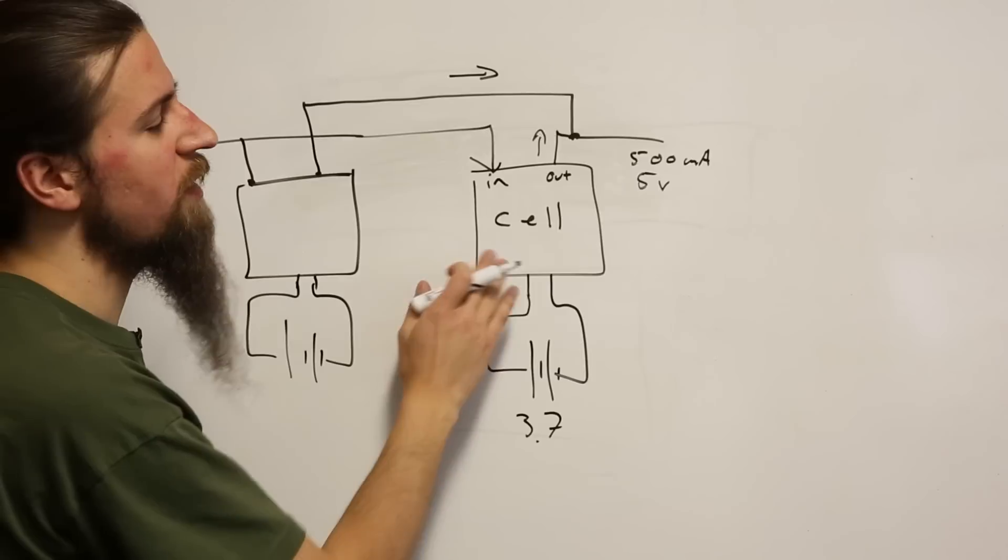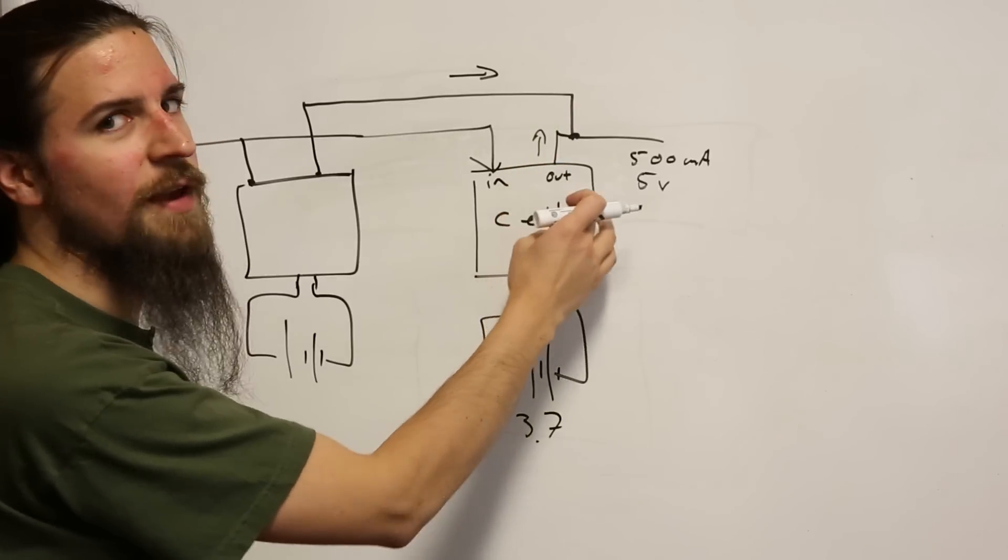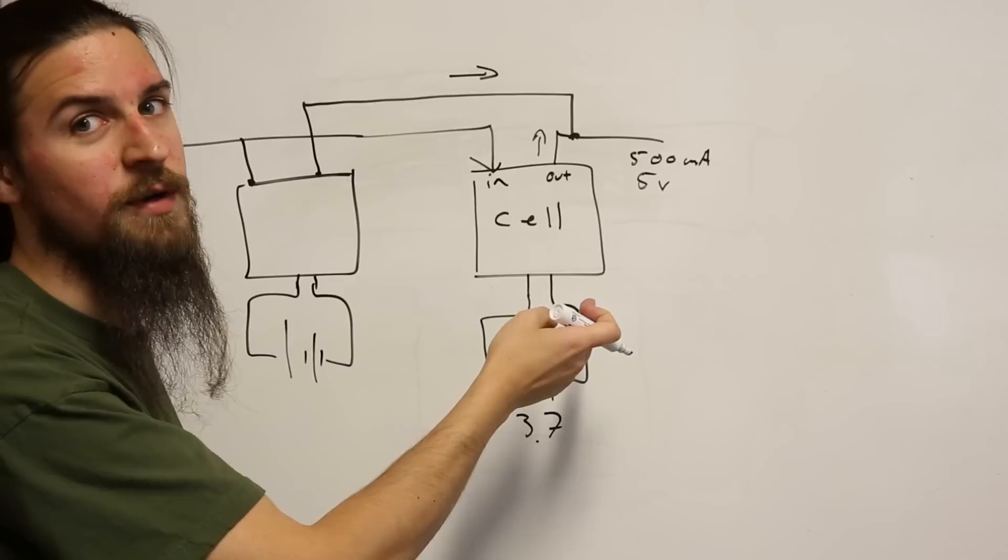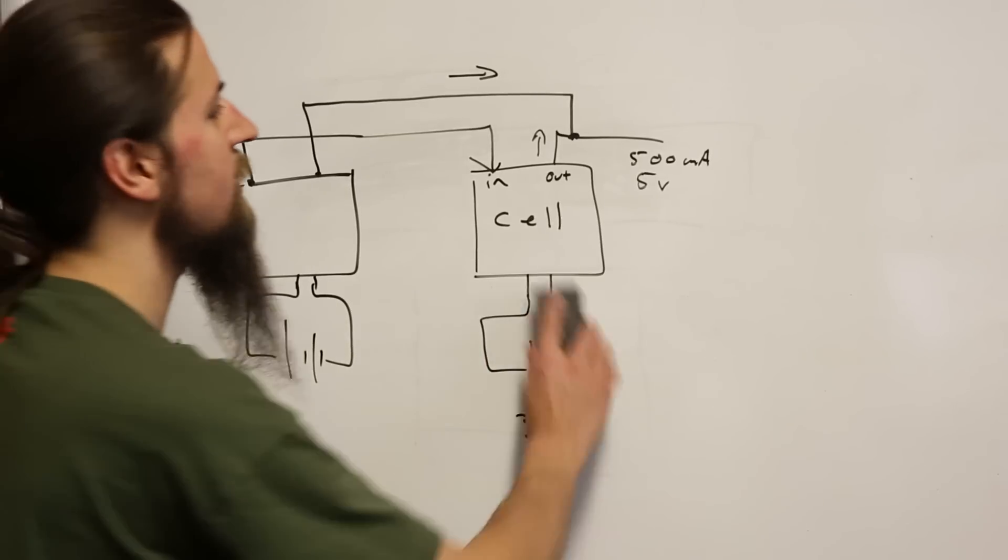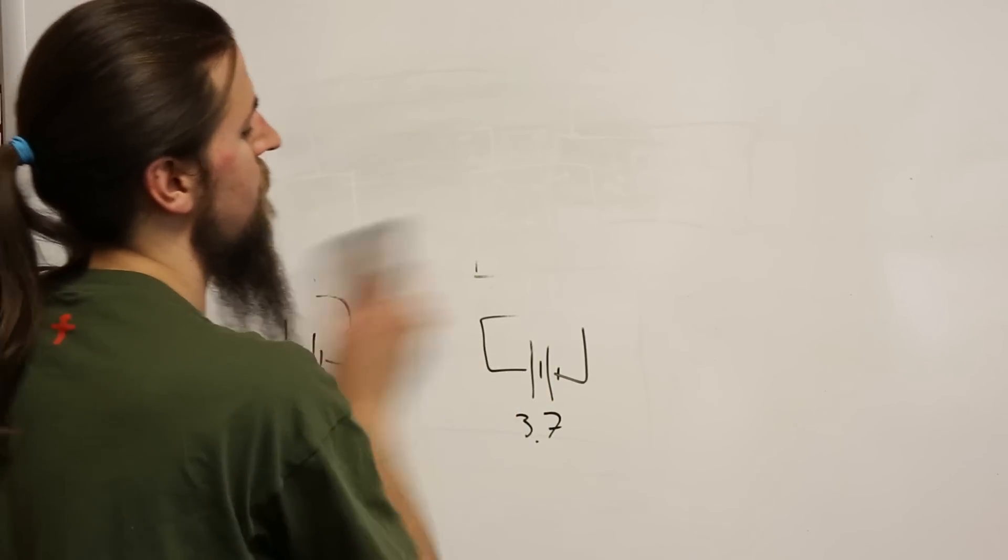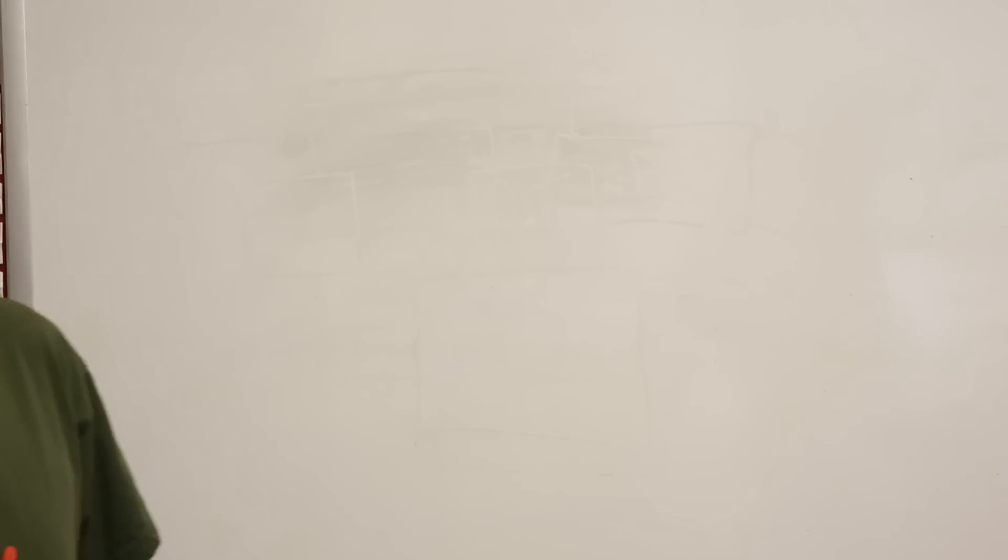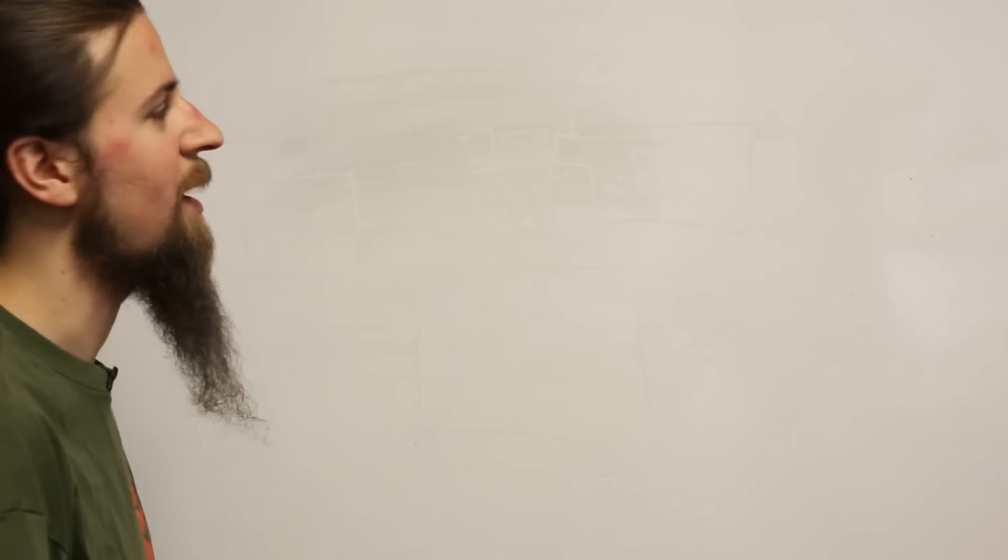But what happens if one of these goes dead? Then we have five volts on the output, driven from a different source. Alright, so let's just look at the output of these two boosters. If we use a diode in series, that'll let the current go out but not back in again.